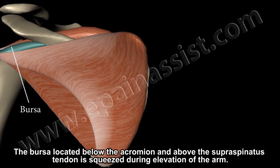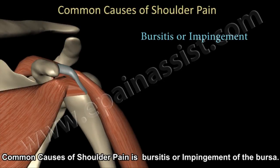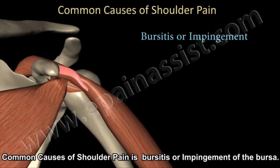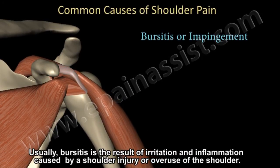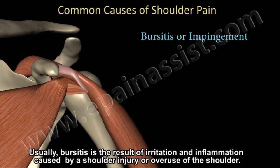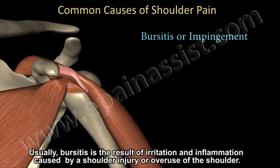The bursa, located below the acromion and above the supraspinatus tendon, is squeezed during the elevation of the arm. A common cause of shoulder joint pain is bursitis or impingement of the bursa. Usually bursitis is the result of irritation and inflammation caused by shoulder injury or overuse of the shoulder joint.